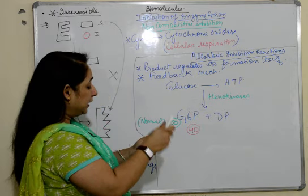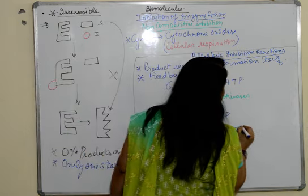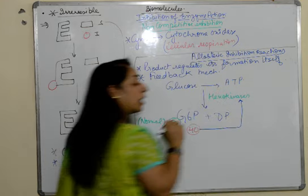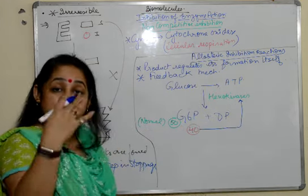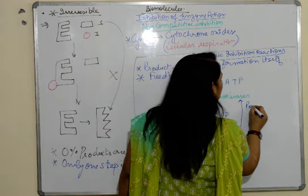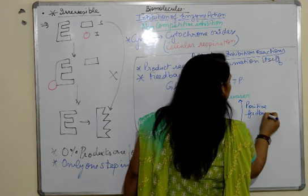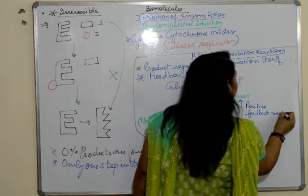Now these 50 molecules of G6 phosphate which are formed will stimulate hexokinase to produce more G6 phosphate. This type of feedback is known as positive feedback mechanism.